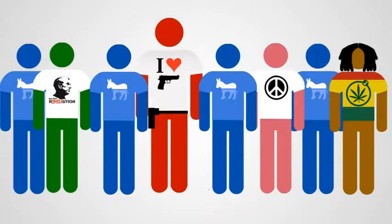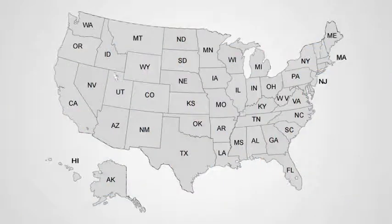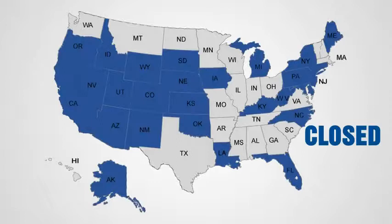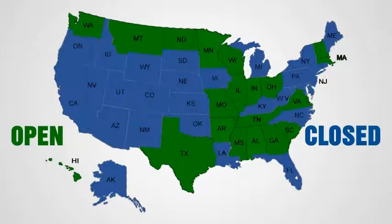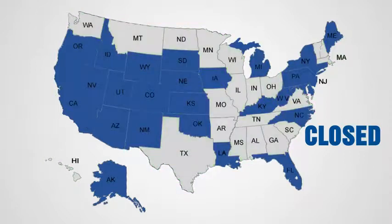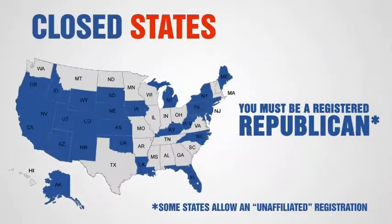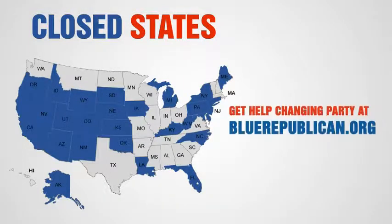Here's the list of states. If you live in one colored blue, you're in a closed state and must register Republican as soon as possible. If you live in one colored green, you do not. But don't forget to go to the primary or caucus on the right day. You can find detailed information about registering Republican in your state on BlueRepublican.org.